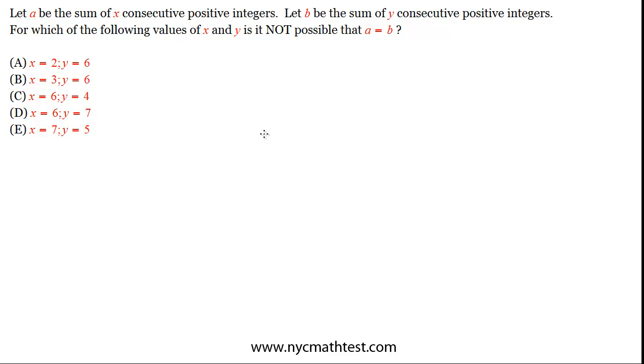Let A be the sum of X consecutive integers, and let B be the sum of Y consecutive positive integers. For which of the following values of X and Y is it not possible that A equals B?